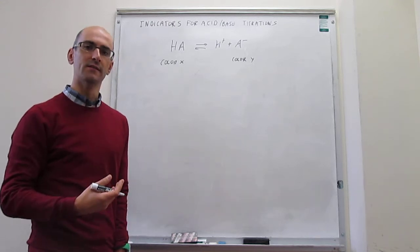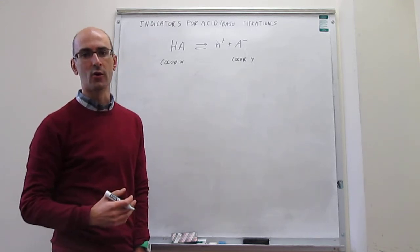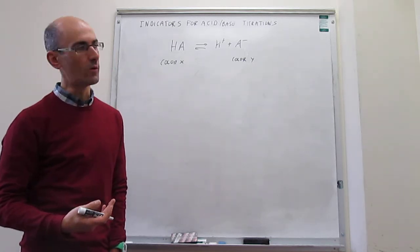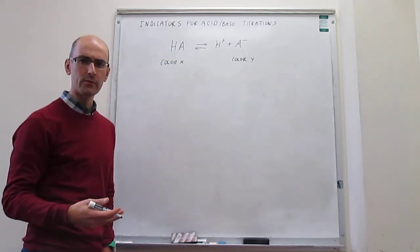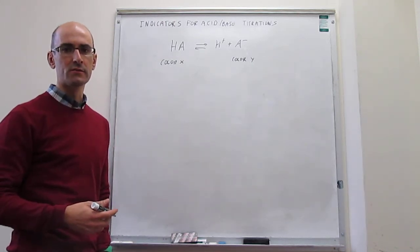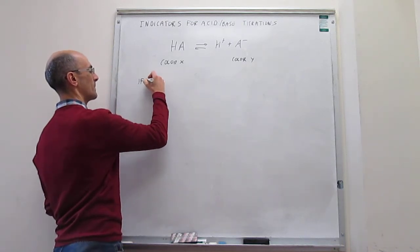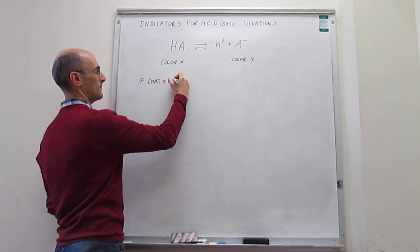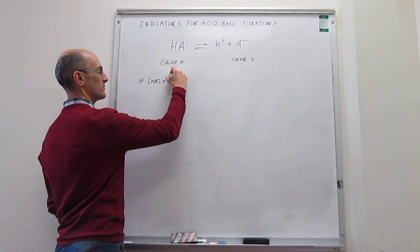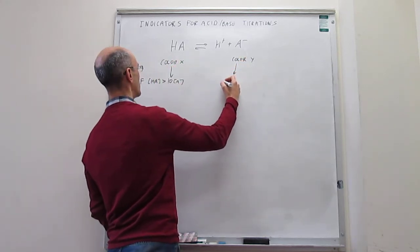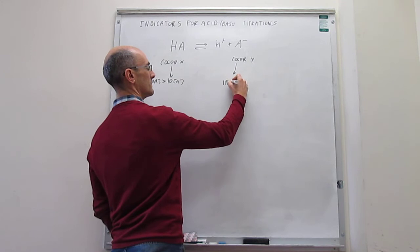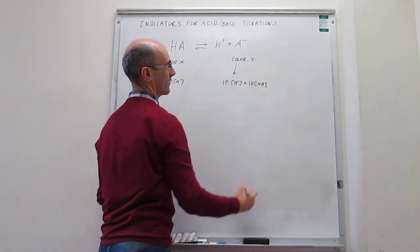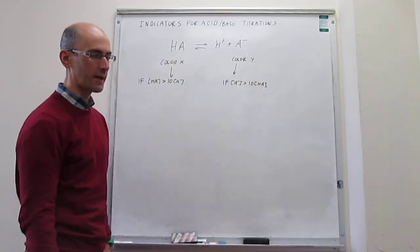If the acid form is dominant, then you will see color X, the color of the acid form. But if the conjugate base is dominant, then you will see color Y, the color of the conjugate base. Our criterion, just for the sake of discussion, is that if the concentration of the weak acid is 10 times larger than the concentration of the conjugate base, then you see color X. But color Y would be seen the other way around, if the concentration of the conjugate base is 10 times greater than the concentration of the weak acid.